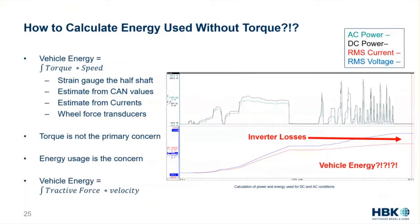Vehicle energy or machine energy is often calculated as the integral of torque times speed. We can do this by strain gauging the half shaft, which has questionable accuracy but can be done. People at HBM have a lot of knowledge on this.